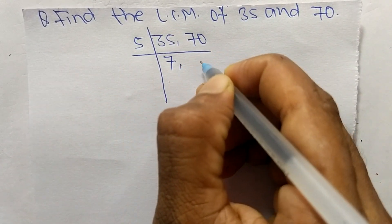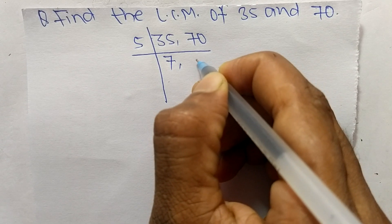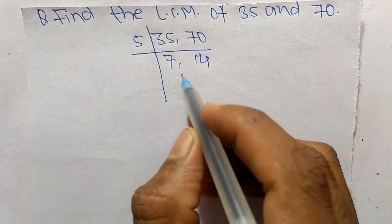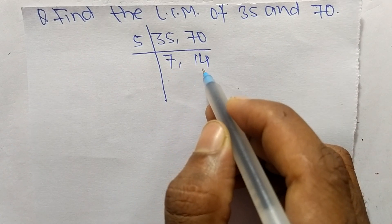5 times 7 means 35, 5 times 14 means 70, so we have here 7 and 14 which is not exactly divisible by 5.